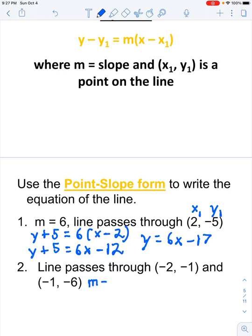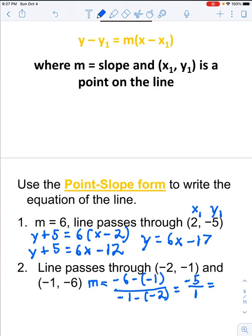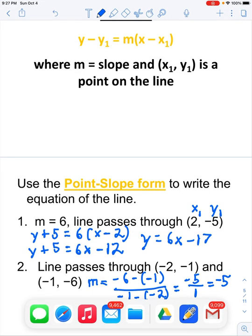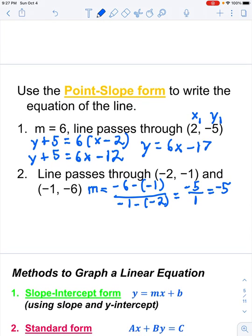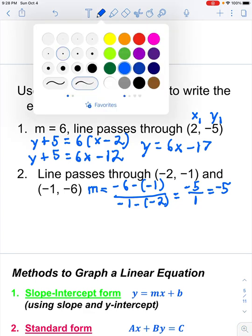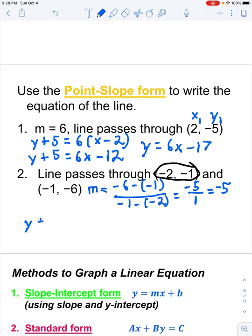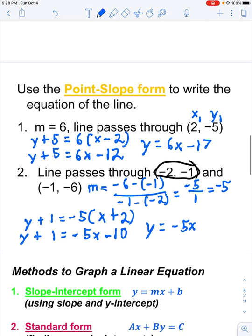In our second example, we need to find the slope of the line first. So, I'm going to take negative 6 minus a negative 1 over negative 1 minus a negative 2. That gives us negative 5 over positive 1, which is negative 5. And so, now we're going to take one of our points, and we're going to plug in with one of our points. I will use this first point right here with the given slope that we found. And so, I'm going to have y plus 1 equals negative 5 times the quantity x plus 2. So, I get y plus 1 equals negative 5x minus 10, which means in slope-intercept form, we'd have y equals negative 5x minus 11.